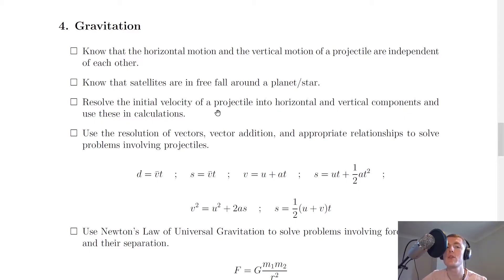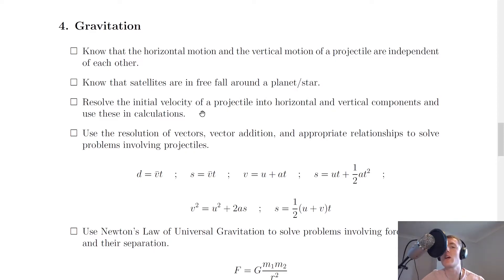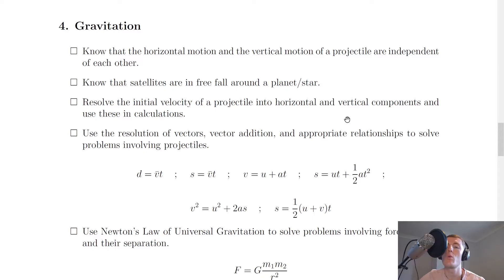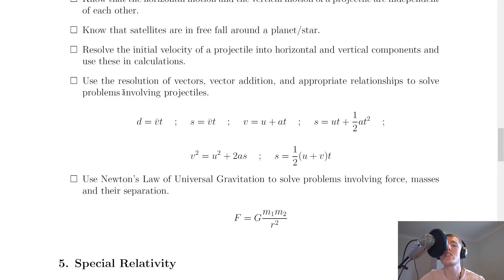Next, you should be able to resolve the initial velocity of a projectile into horizontal and vertical components and use these in calculations. This applies to objects launched at an angle, where you'll have a velocity vector at a diagonal. To work out the horizontal component you use cosine — v times cos of the angle — whereas for the vertical component you do v times sine of the angle.